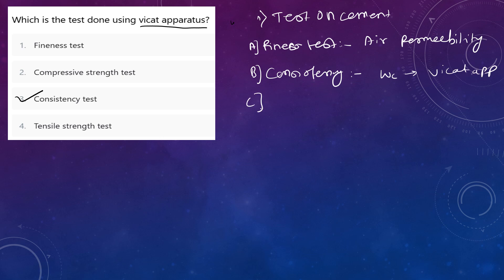Third is initial setting time and final setting time. Both setting times are conducted using the Vicat apparatus. Here's one more concept: initial setting time requires 0.85 times P. Whatever consistency we find, 85% of that water content is taken for both initial and final setting time.